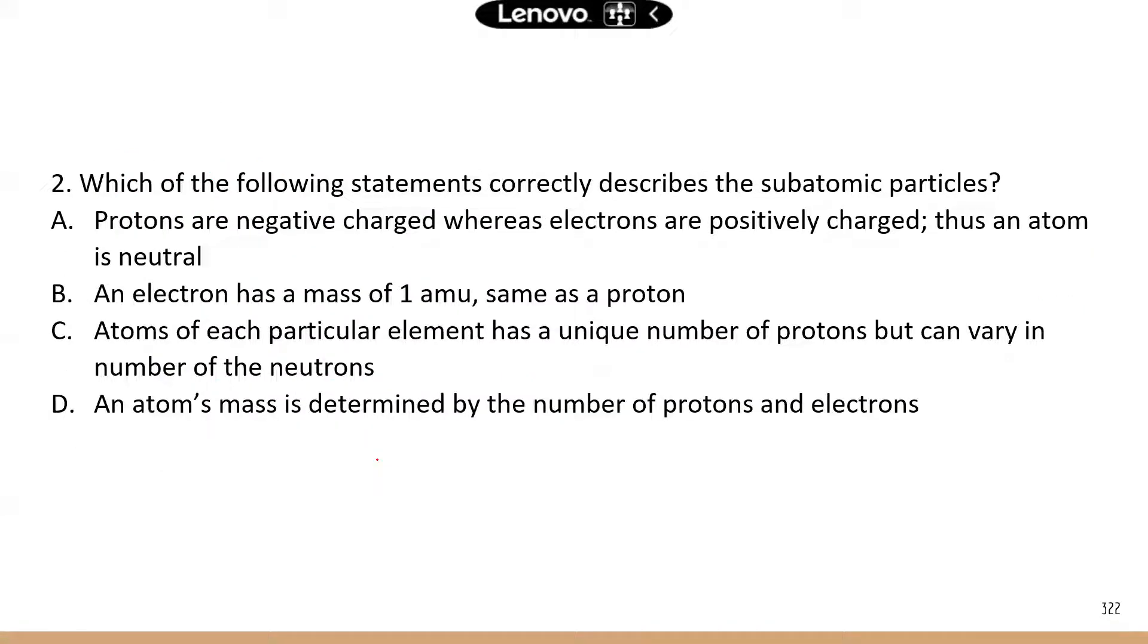Number two: which of the following statements correctly describes the subatomic particles? This is related to the first and second objectives in the study manual about the different parts of an atom. A: protons are negatively charged. You know this is not right—protons are positively charged, electrons are negatively charged. B: an electron has a mass of one amu, atomic mass unit, same as a proton. Now a proton does have a mass of one, but electrons do not have any mass, so B is not correct. C: atoms of each particular element have a unique number of protons but can vary in the number of neutrons. That's correct. This statement is basically about isotopes.